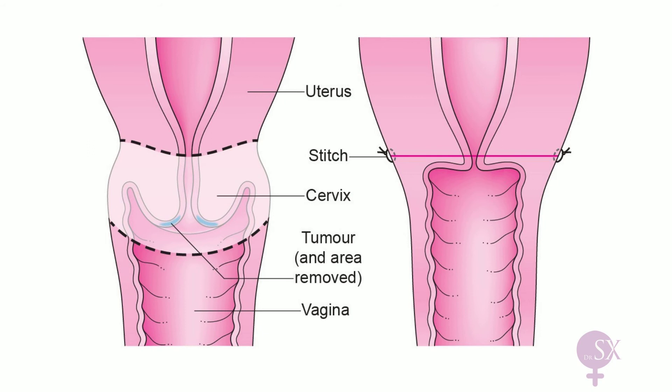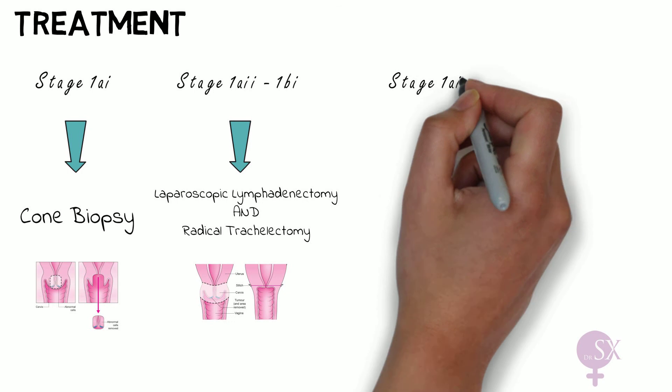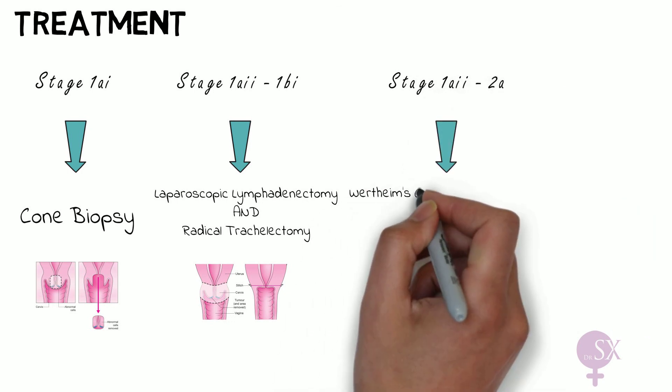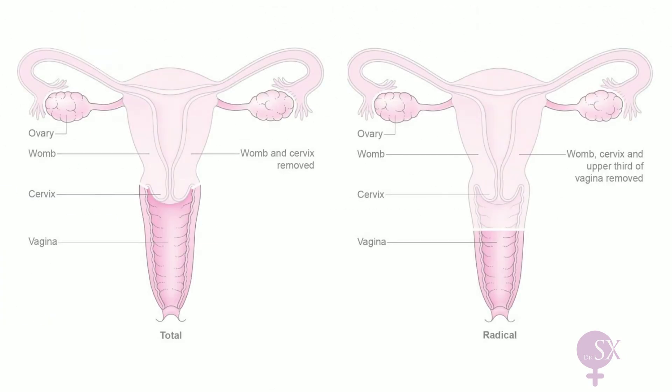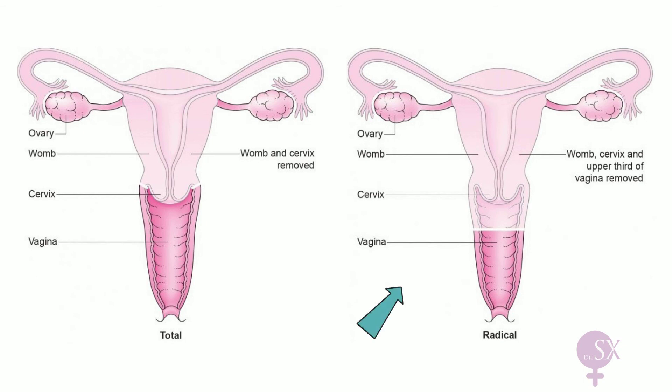For stages 1a2 to 2a, options include a Wertheim's radical hysterectomy or chemoradiotherapy. The surgical option is for younger patients who are fit for surgery and have completed their family; chemoradiotherapy is offered to older or unfit patients. A Wertheim's hysterectomy involves complete removal of the uterus, cervix, upper vagina, and parametrium, together with lymphadenectomy; the ovaries and tubes are usually left in situ but not always.